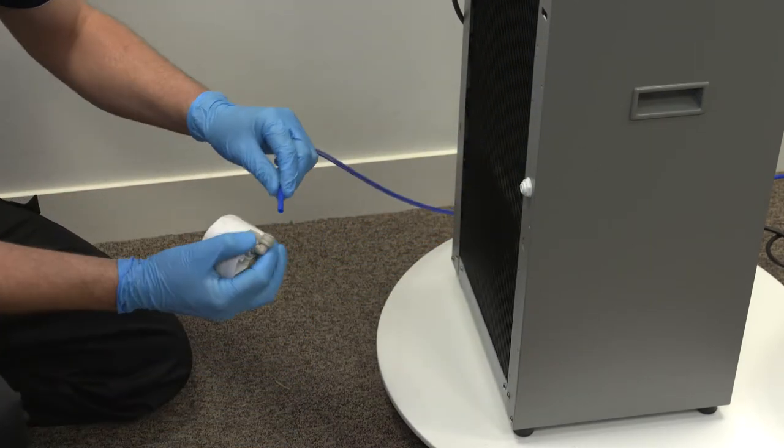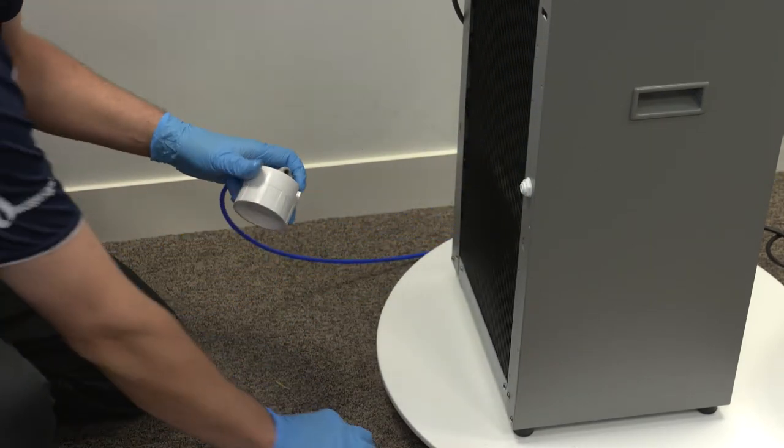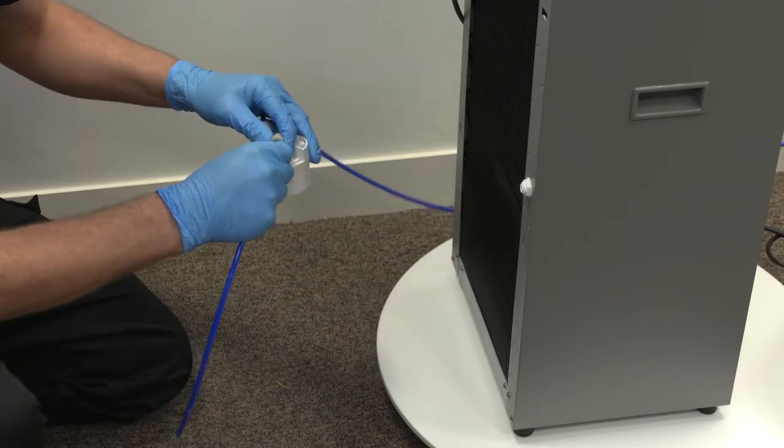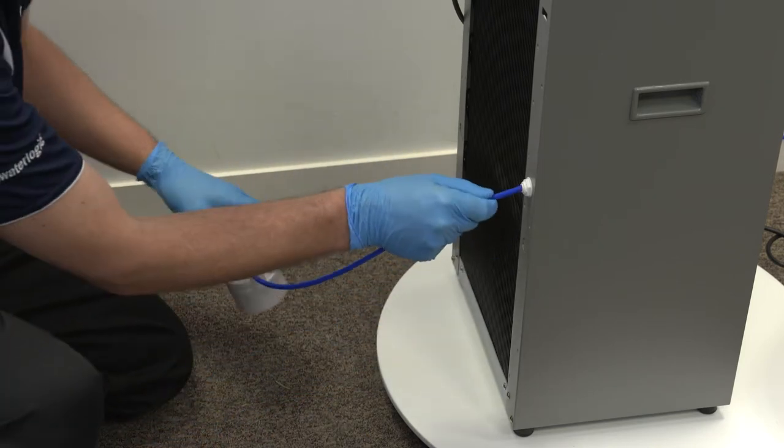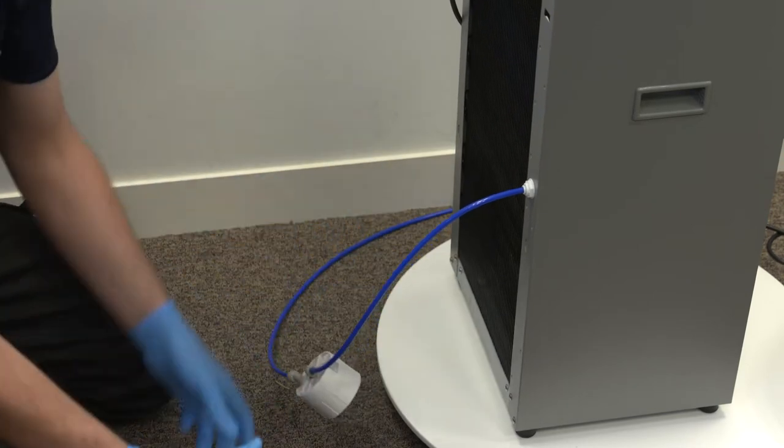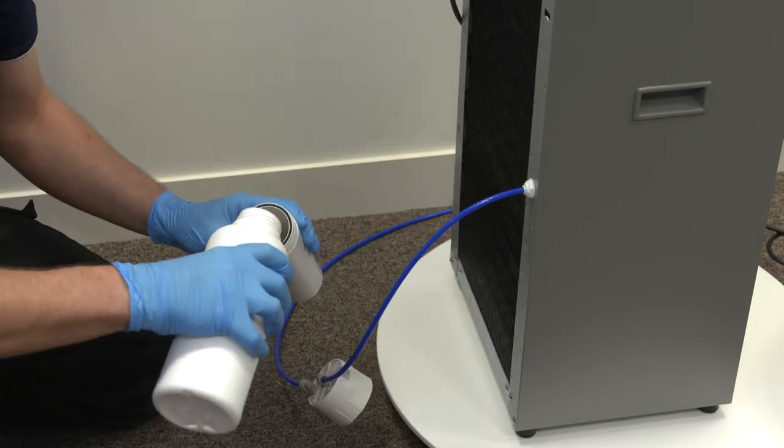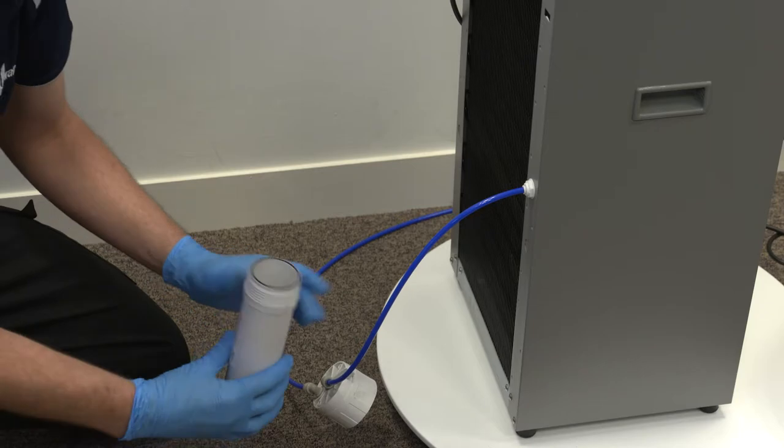Disconnect the one quarter inch tube feeding water to the bulkhead of the machine and pour approximately 60 milliliters of aquedosa sanitizing solution into an empty filter housing. For other products, follow the manufacturer's guidelines.